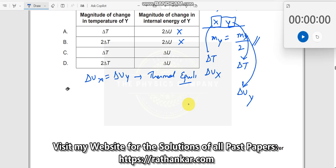Now, we know ΔU is nothing but mcΔT. So mXcXΔTX should be equal to mYcYΔTY. I do not know what is the change in ΔTY.